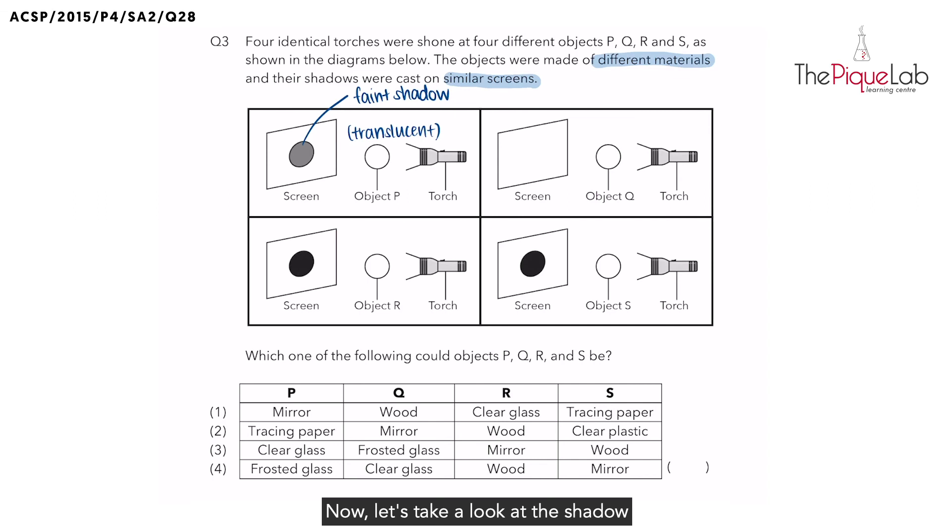Now let's take a look at the shadow that is cast by object Q. You notice that the screen is blank. There is no shadow formed. When we do not observe a shadow, that means no light from the torch was blocked. That goes to tell you that object Q must have allowed most or in fact all light to pass through. So what can you tell me about the transparency of object Q? It is transparent.